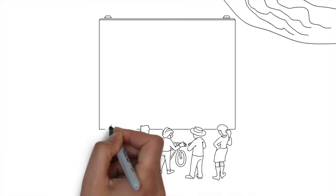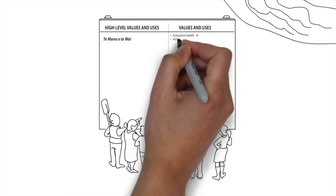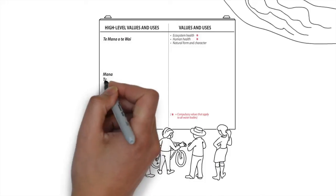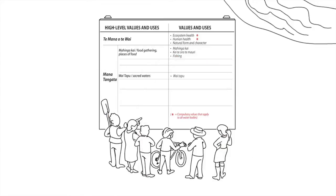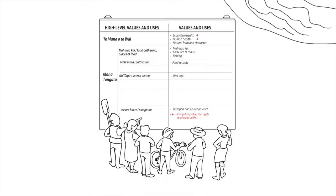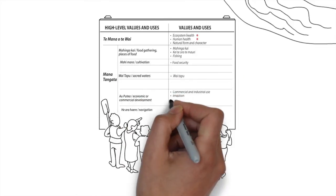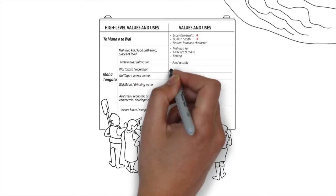The National Objectives Framework is a tool to help communities make decisions in a systematic and consistent way. It guides thinking and planning, and as the science becomes settled, it will continue to be populated with more information. It will provide us with a common language for talking about the way we manage fresh water, instead of everyone paying different experts to argue in the Environment Court about the science and the way competing uses might affect water quality.